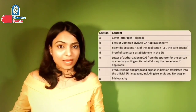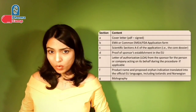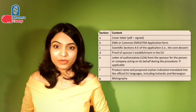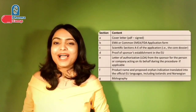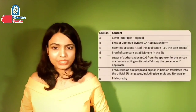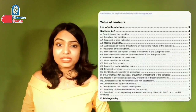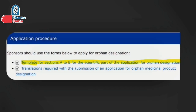The application includes: a cover letter, scientific section, proof of sponsor's presence or establishment in the EU, a letter of authorization if another person or company is acting on behalf of the sponsor in the EU, the product name, proposed orphan indication translated into all official EU languages plus Icelandic and Norwegian, and literature references. The scientific information core dossier template can be downloaded from the EMA website.